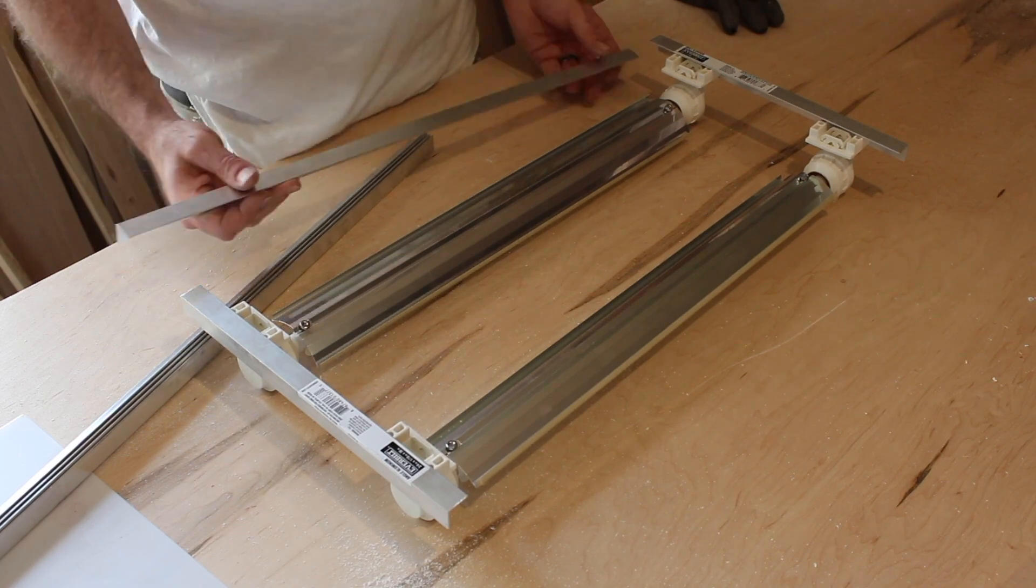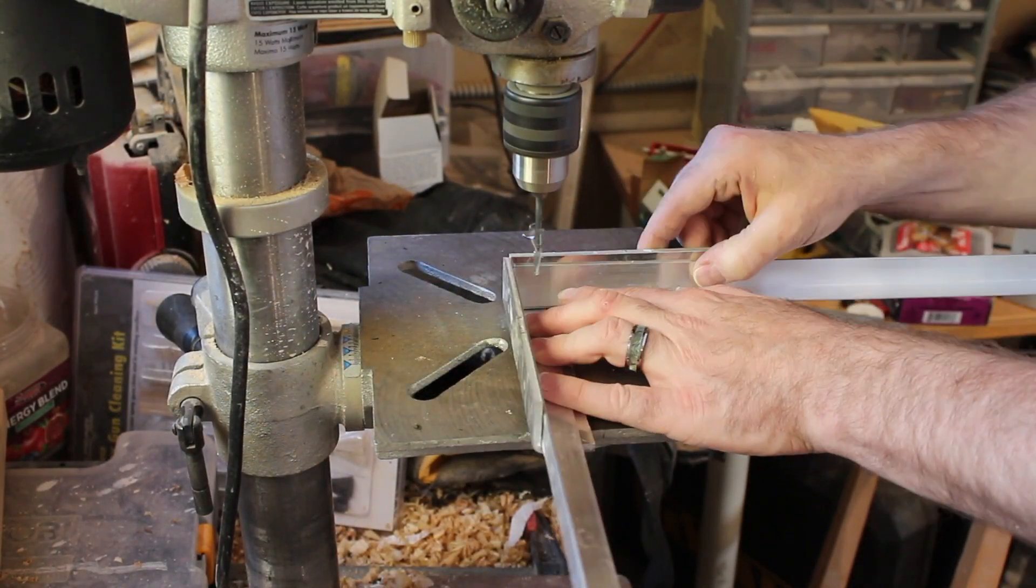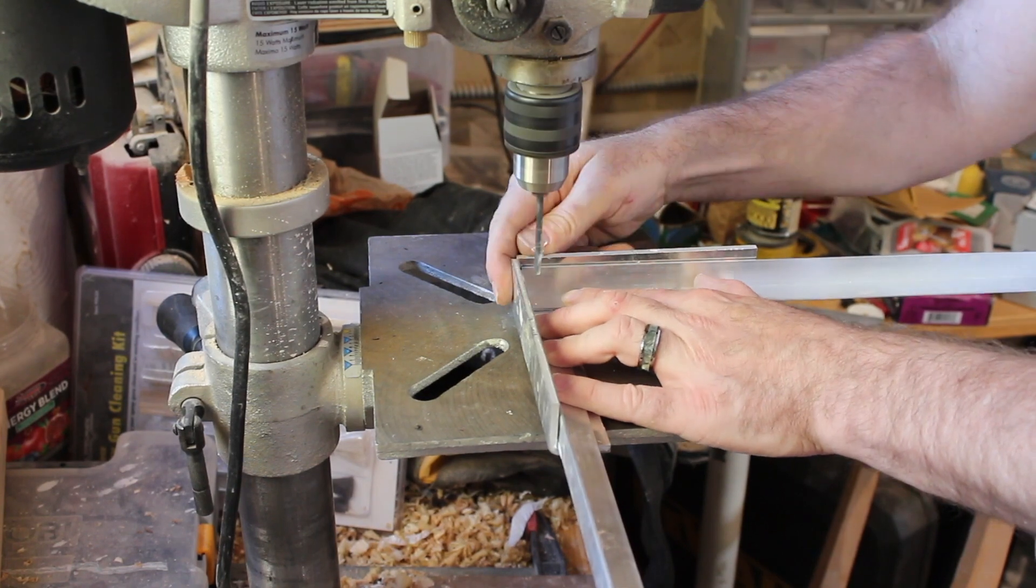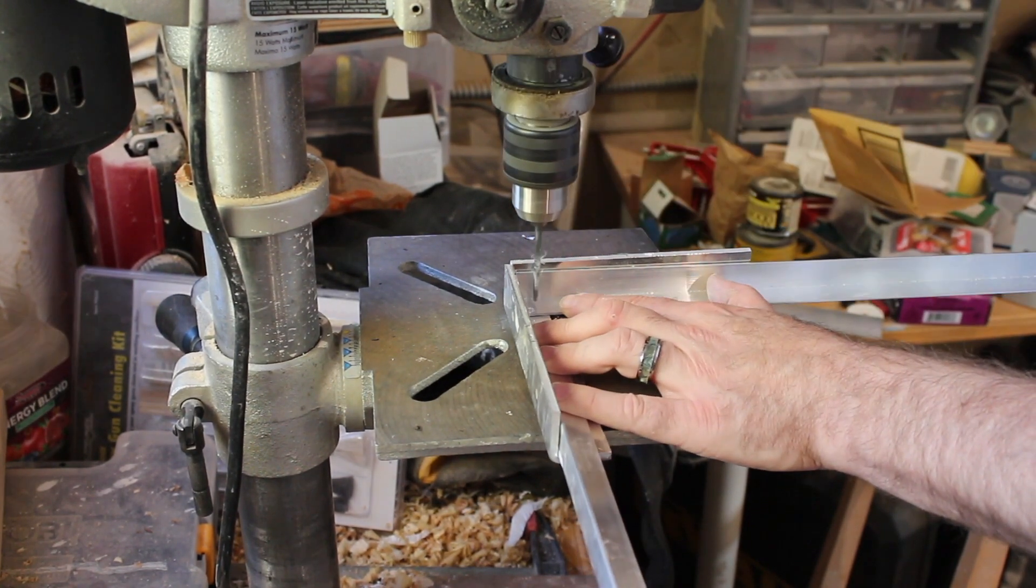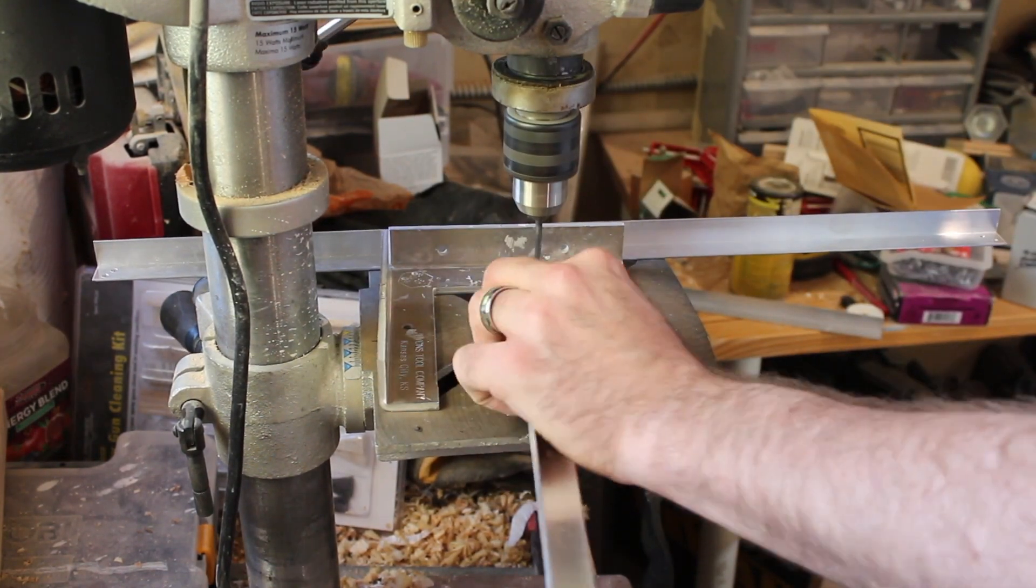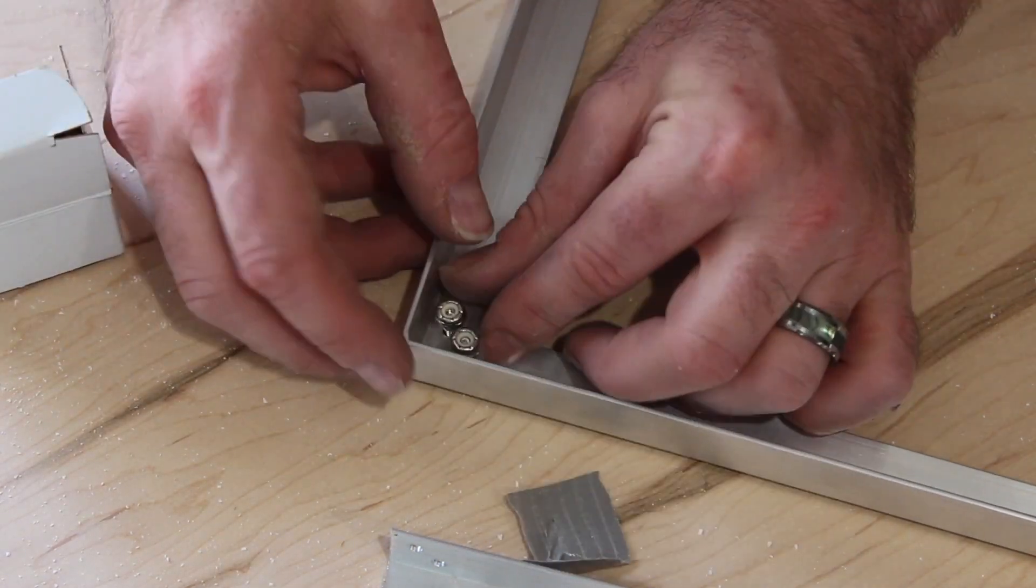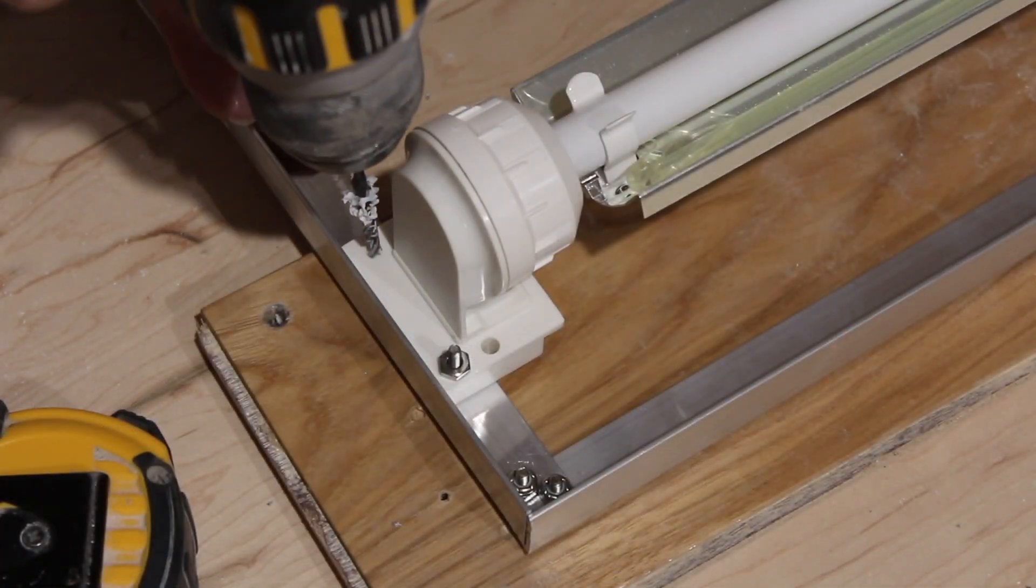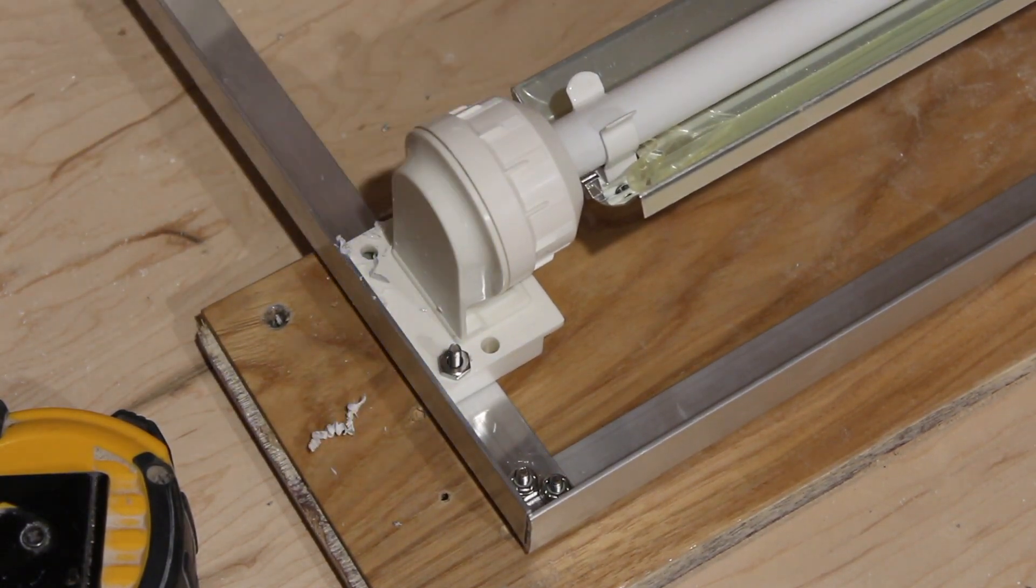To make the lighting hood, we're starting with some really inexpensive aluminum angle. I think these pieces are like five or six bucks a stick, and we're just going to make a frame, paint it white for a little bit of corrosion resistance. I've had aluminum over tanks for years with no corrosion, and we're just going to put all of our components into it.